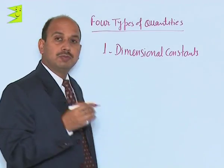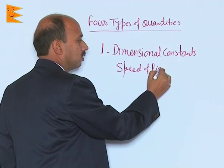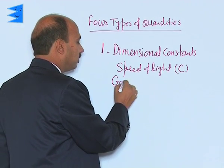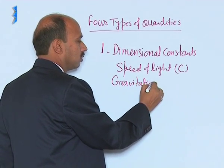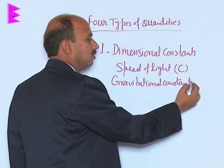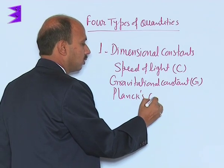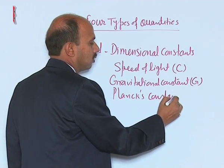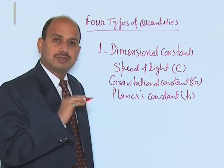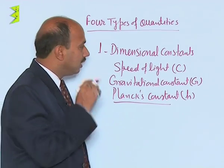There are certain values like the speed of light, that is C — it remains constant in vacuum — gravitational constant capital G, and Planck's constant H. These types of constants have dimensions, so these constants are known as dimensional constants.